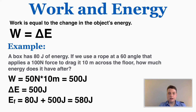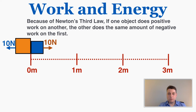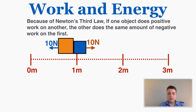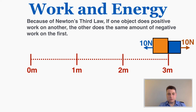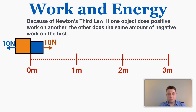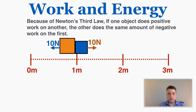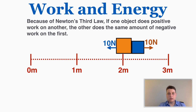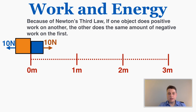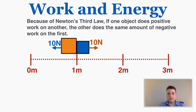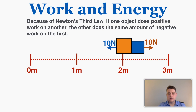You'll notice an interesting pattern here. Because of Newton's third law, if one object does positive work on another, the other object does the same amount of negative work on the first. So if the orange box is putting 10 newtons to the right on the blue box, the blue box is putting 10 newtons to the left on the orange. If they're moving to the right, the orange box supplies positive work to the blue, and the blue supplies the exact same amount of negative work to the orange.